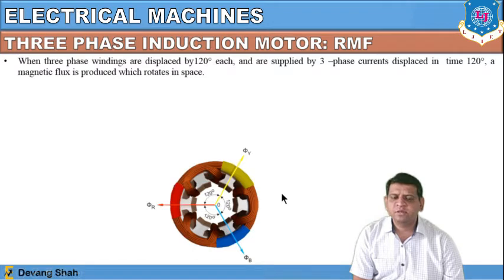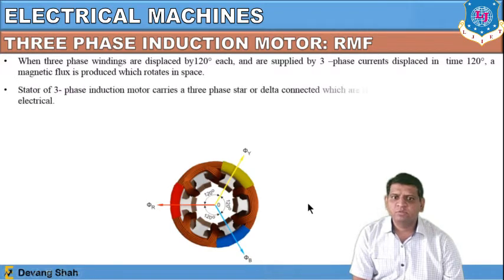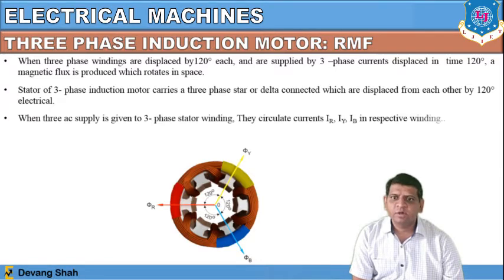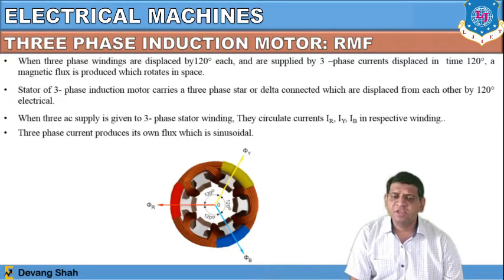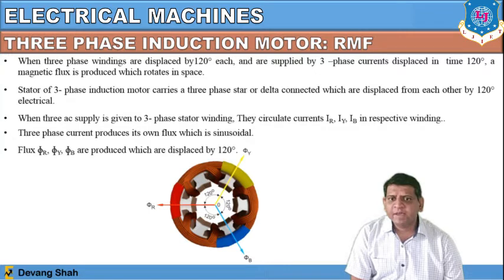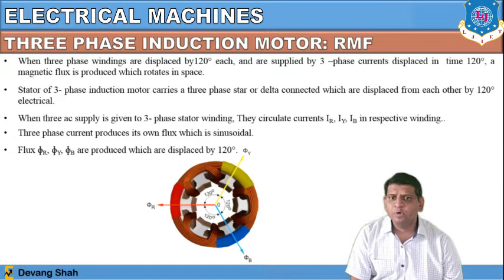Once you apply the three-phase AC signal, this particular winding will produce a rotating magnetic field where windings are 120 degrees apart. The stator of the three-phase induction motor carries three-phase star or delta connected windings displaced from each other by 120 degrees electrically. From that, we apply three-phase AC signals in the form of currents IR, IY and IB, which produce magnetic fluxes φR, φY and φB — all displaced 120 degrees apart from each other.